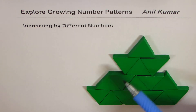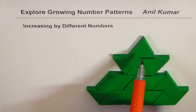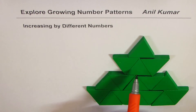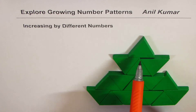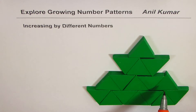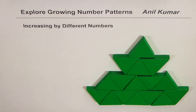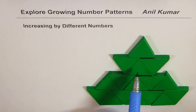What you see here is a pattern formed with a few triangles. In the top row, we have only one triangle. Then we added three, so in two rows we have four triangles in all. Now in the third row, we added five — one, two, three, four, five — making one plus three is four, and four plus five is nine. If you add seven, you get sixteen triangles.